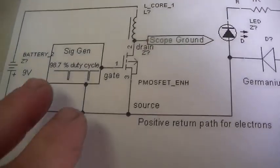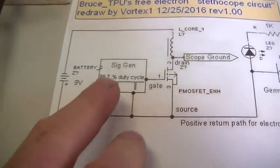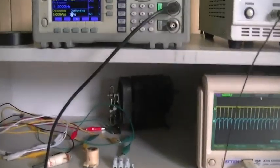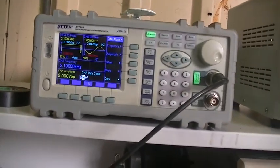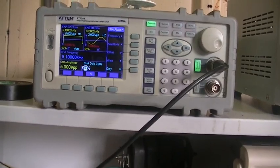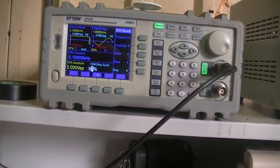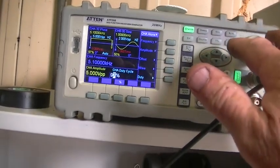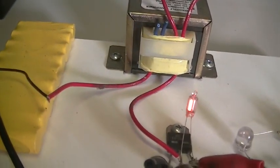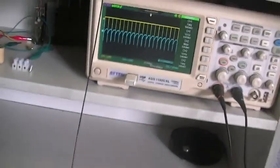It says here to have the duty cycle at 98.7%. My signal generator only goes up by one, so we have no decimal points, but we can go to 97% or 98%, and it really makes no difference to anything.